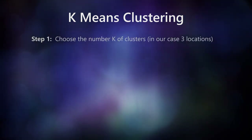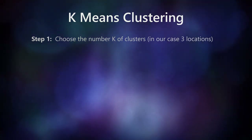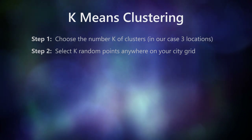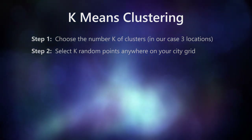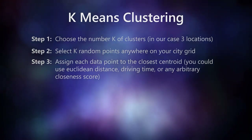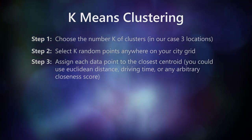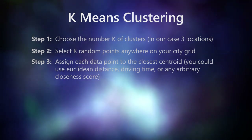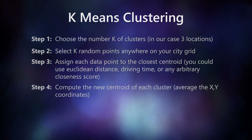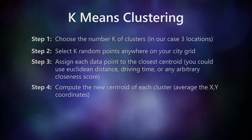Step 1: Choose the number k of clusters. In our case, three locations. Step 2: Select k random points anywhere on your city grid. Step 3: Assign each data point to the closest centroid. You could use Euclidean distance, driving time, or any arbitrary closeness score. Step 4: Compute the new centroid of each cluster, averaging the x and y coordinates.